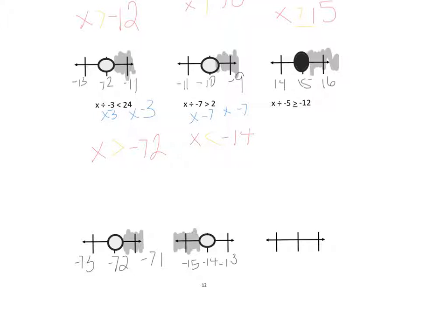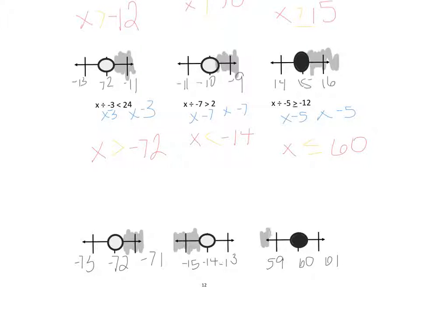Now for the final example in inequalities: x divided by negative 5 is greater than or equal to negative 12. We multiply both sides by negative 5 because multiplication is the inverse of division. Negative 12 times negative 5 is positive 60 — it's positive because the signs are the same. Then we flip our symbol from greater than or equal to, to less than or equal to. We have a closed circle at 60, and we shade everything that is less than 60, so we shade to the left.